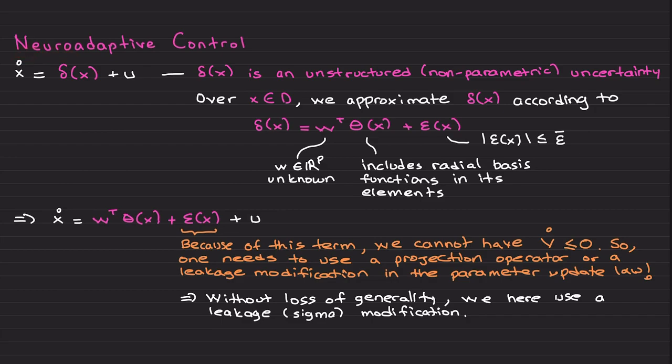We now deal with this system. What is different than before? We have an unstructured uncertainty. We learned from the previous video over a compact domain D, we can approximate this unstructured uncertainty according to this radial basis function neural network. Here W is p-dimensional unknown weight to be estimated by the parameter update law. Theta, we reconstruct this based on radial basis functions. So it is basically a p by 1 vector including its elements include radial basis functions, and this is a bounded residual error. We mentioned that as we include more neurons, more radial basis functions, we can make this error smaller. And of course after this video, I am going to immediately upload a MATLAB simulation example to illustrate this precisely. Then you are going to know how to implement neuroadaptive control architectures.